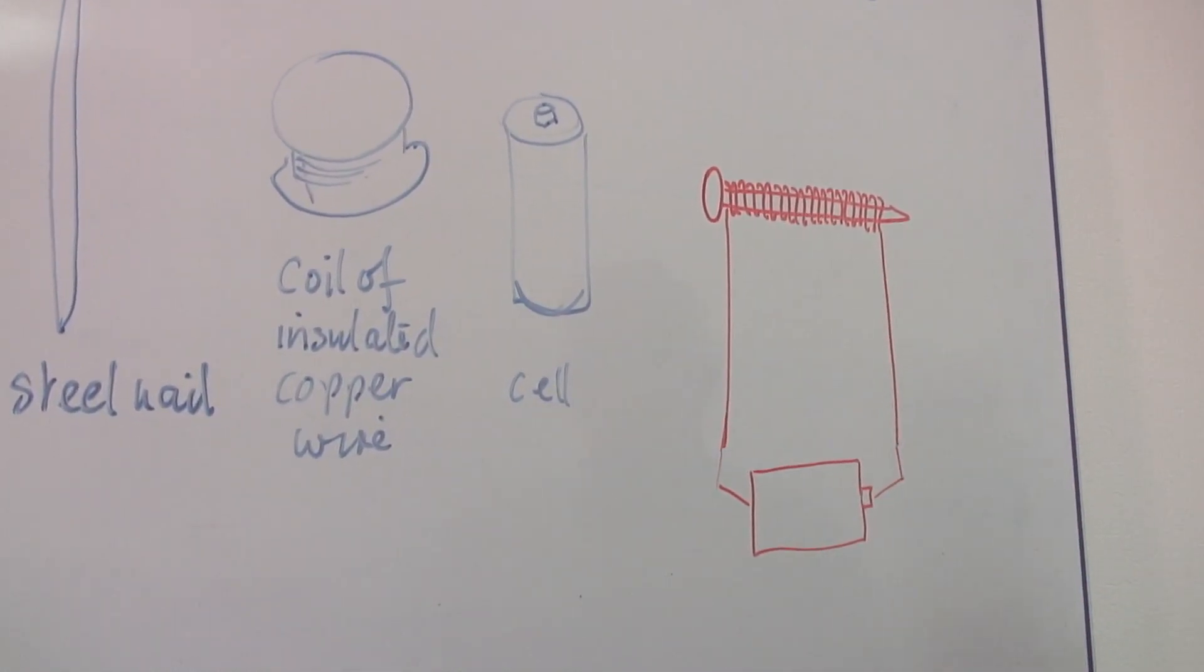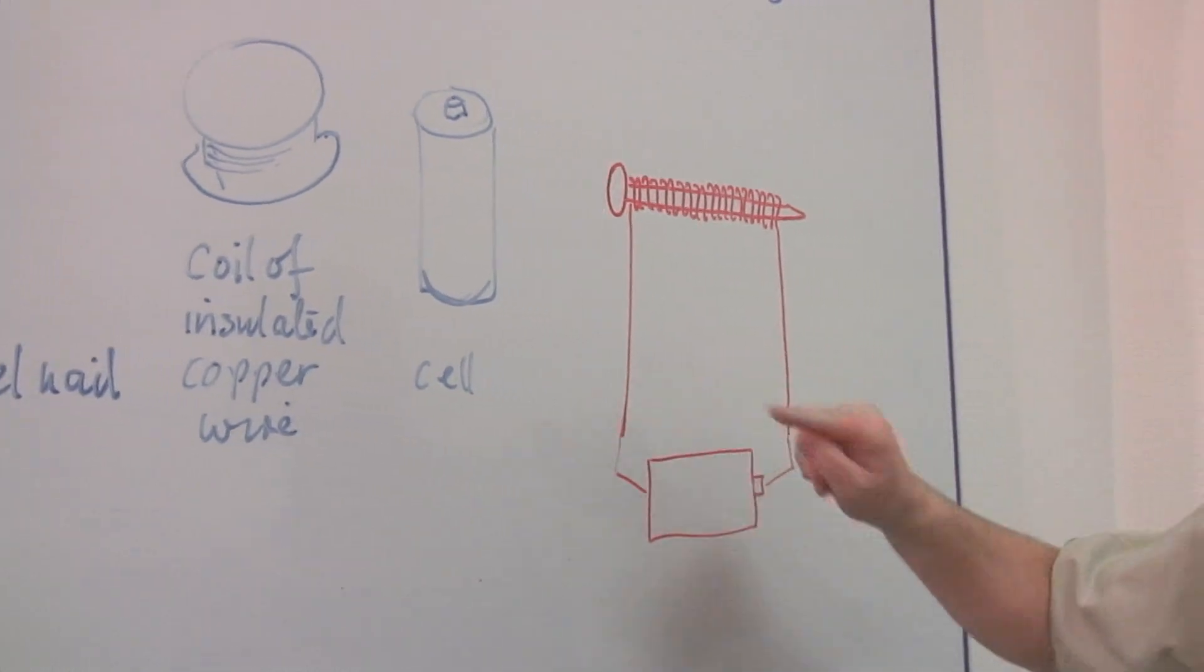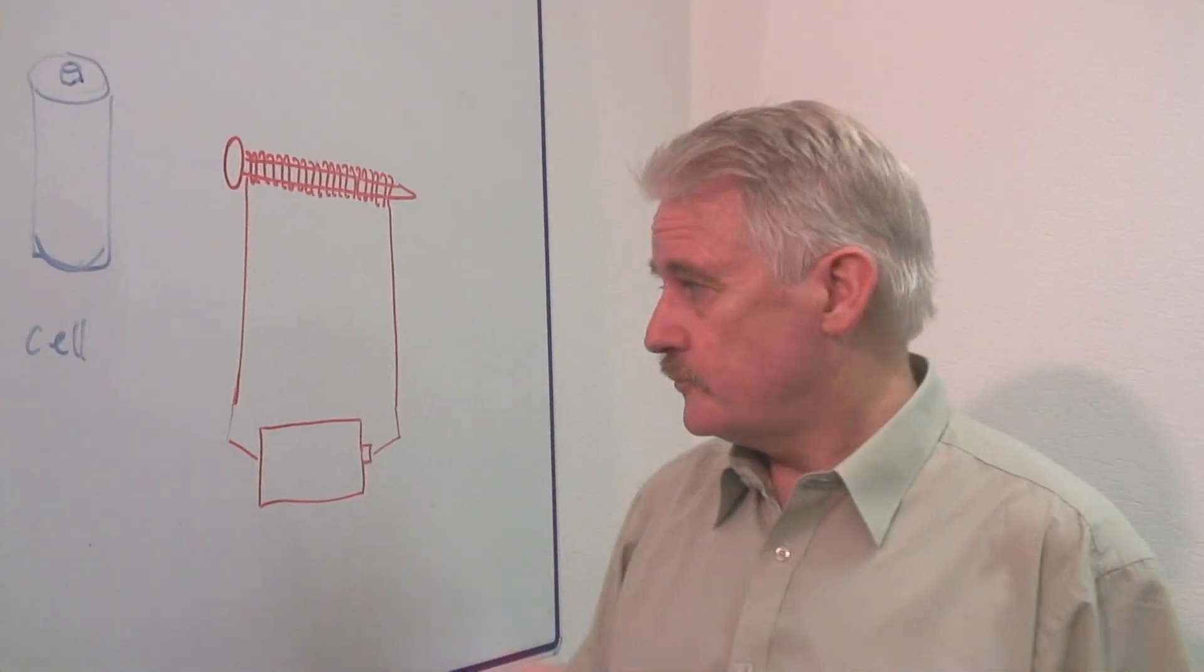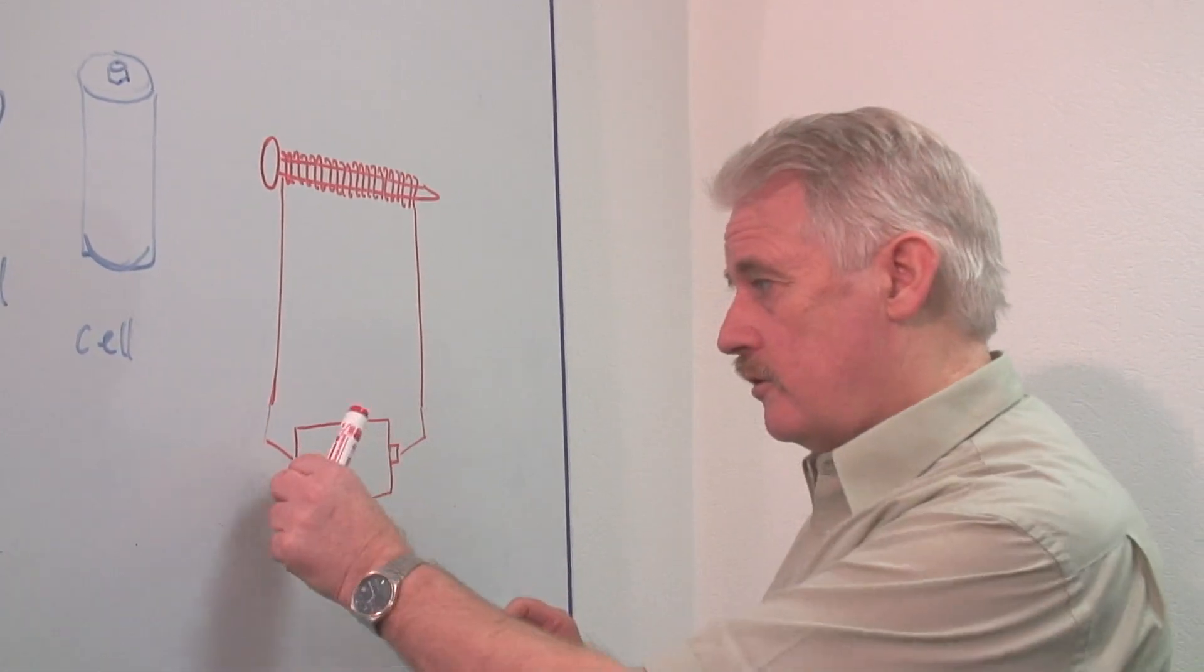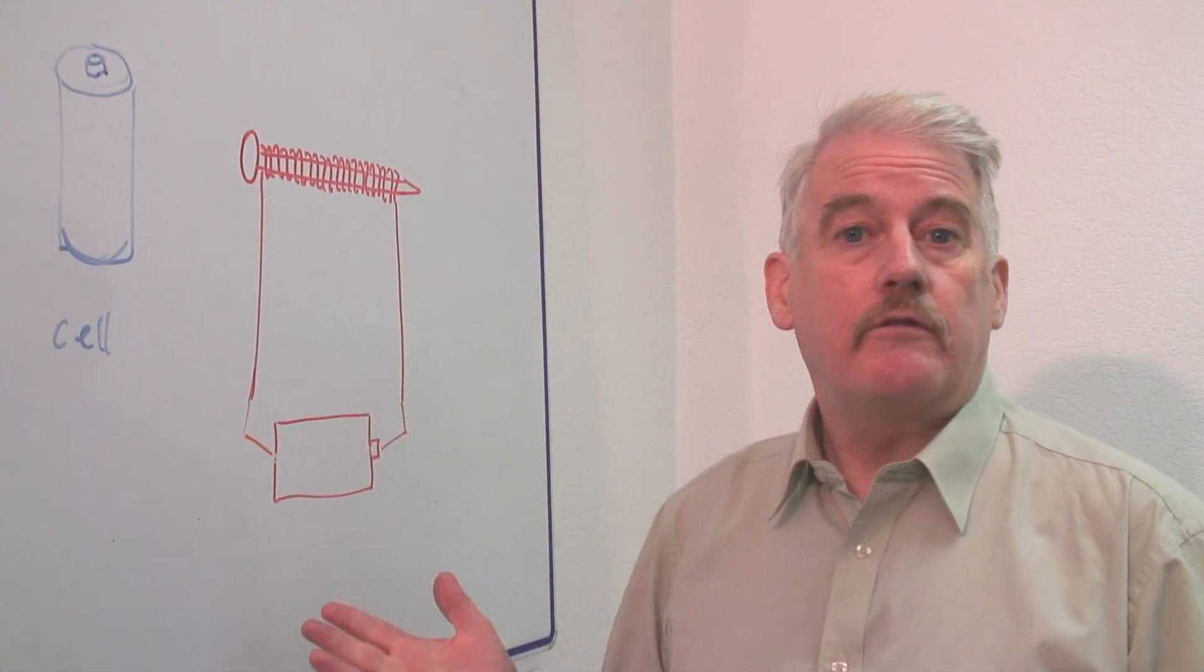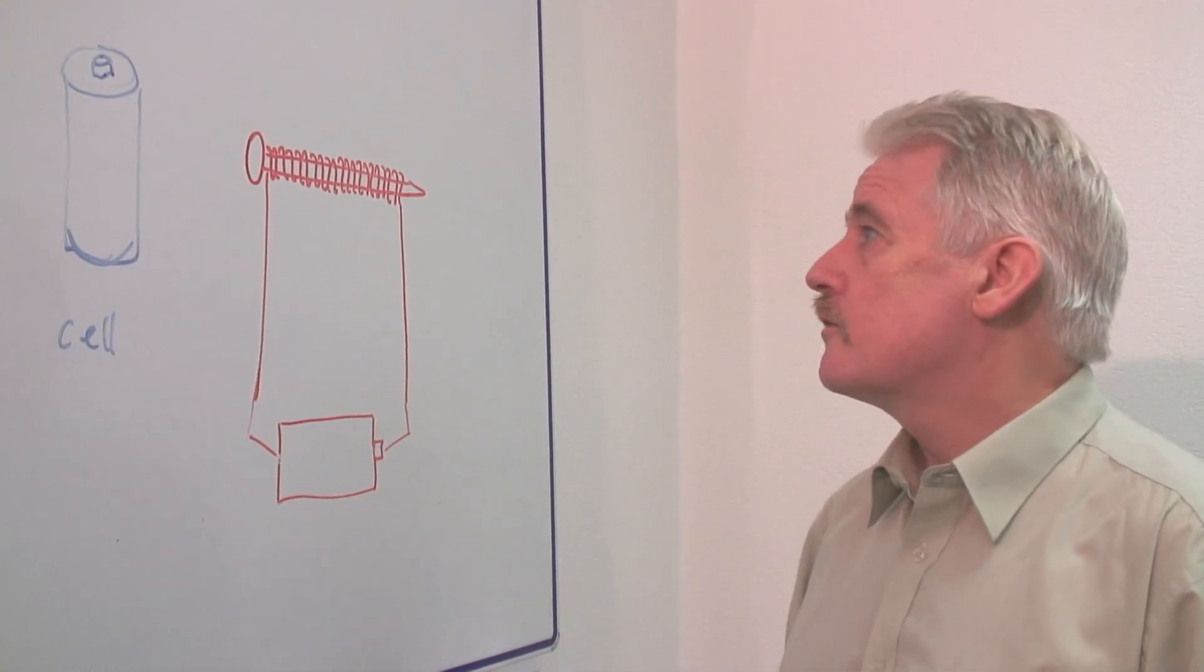And that is your electromagnet. If you want to switch it on, all you do is attach it. If you want to switch it off, you take one side off. That is a crude way of switching.